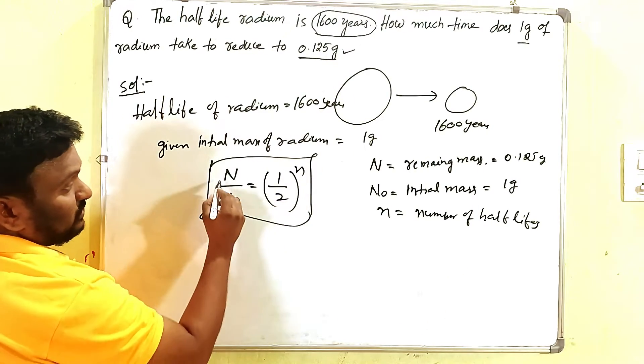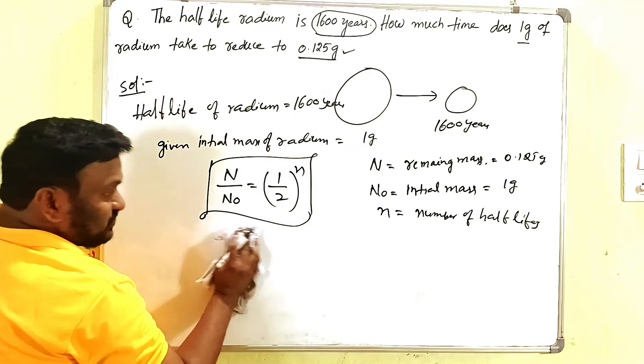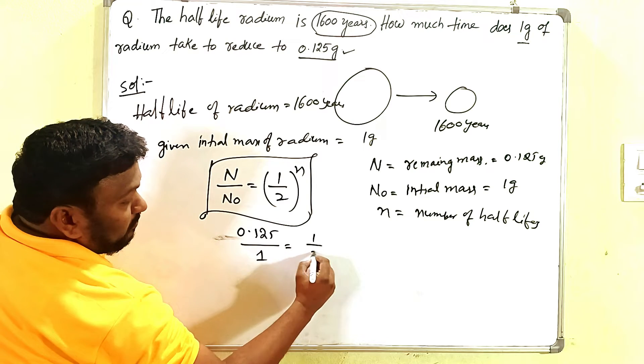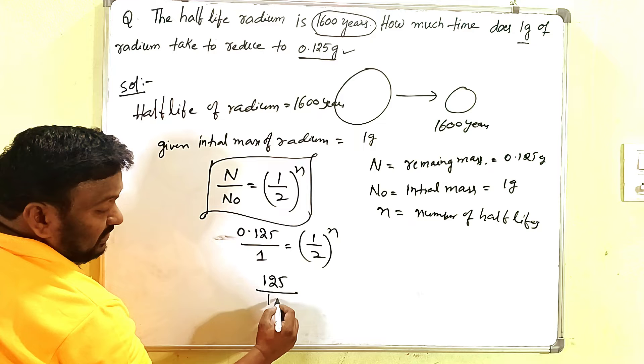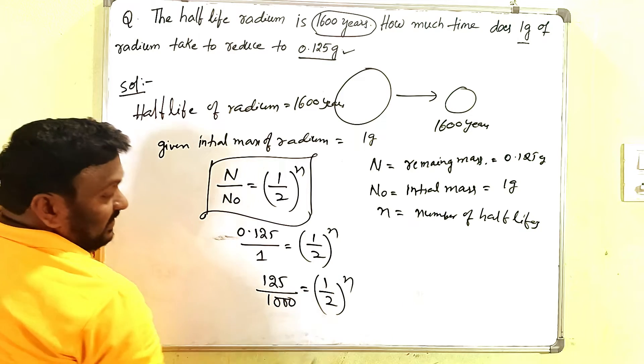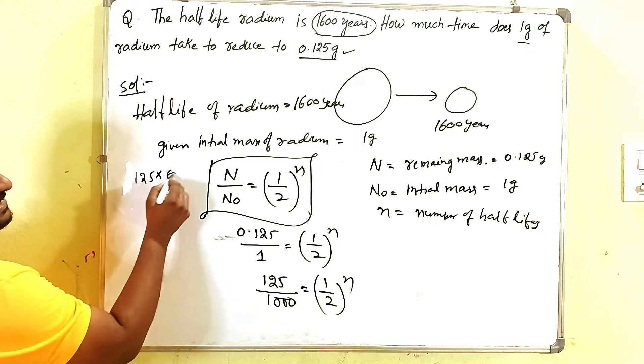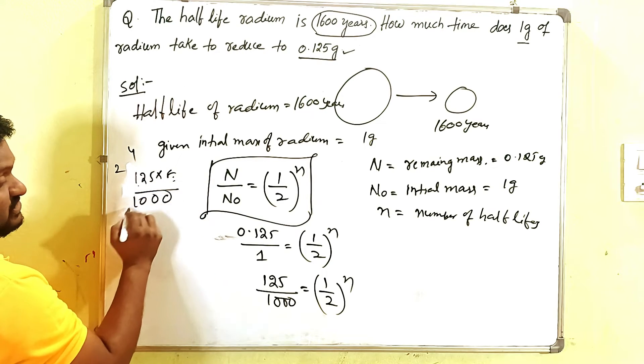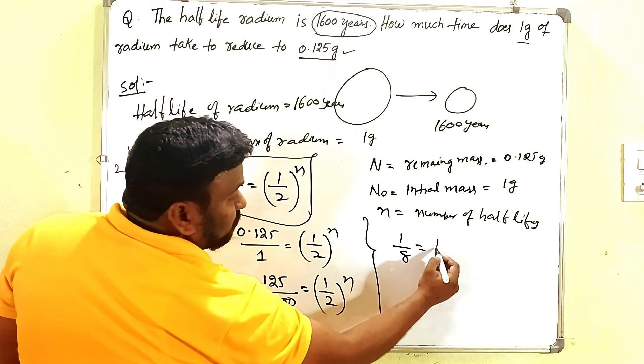So simply here, now you have to solve the values. N equals N₀, or simply here you can write like this also. What is N? 0.125 by 1 equals 1 by 2 to the power n. 0.125 is nothing but 125 by 1000, which equals 1 by 2 to the power n. 125 by 1000 equals 1 by 2 to the power n.